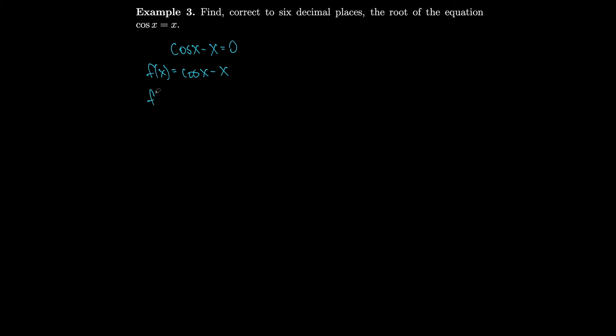So the derivative, f'(x), is equal to -sin(x) - 1. Let's do Newton's method. We've got xₙ₊₁ = xₙ - (cos(xₙ) - xₙ)/(-sin(xₙ) - 1), which equals xₙ + (cos(xₙ) - xₙ)/(sin(xₙ) + 1).